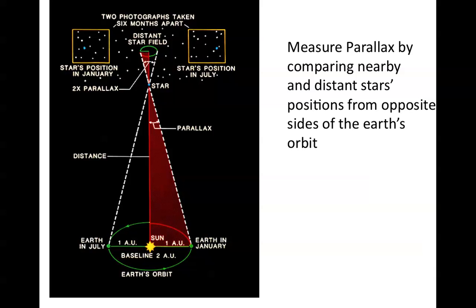In space, we can do more or less the same thing. We measure parallax by comparing nearby and distant stars' positions from opposite sides of the Earth's orbit. You can simulate this at home: hold up your thumb at half arm's extension in front of a light, close one eye to block the light, then switch eyes — your thumb appears to move. Extend your arm fully and repeat; the thumb moves less. That's because when the object is more distant, the angular change as you shift your viewpoint along the baseline between your two eyes is not as large.